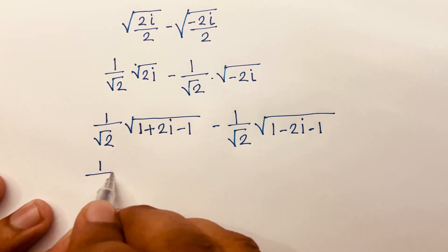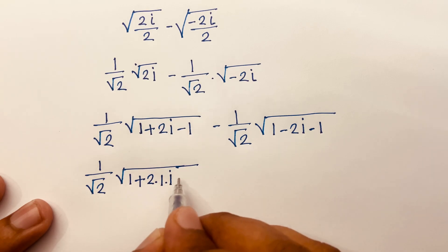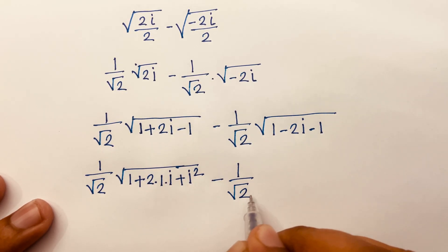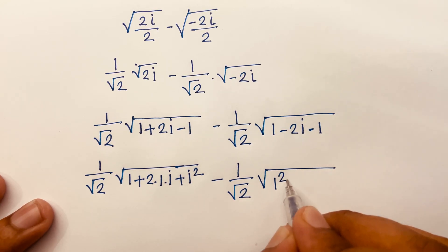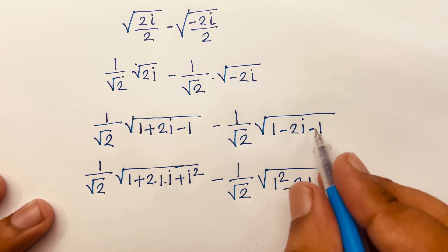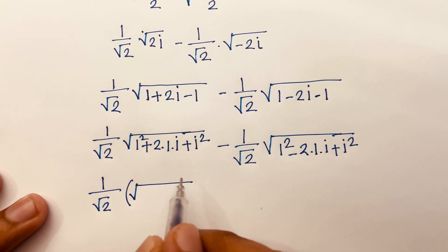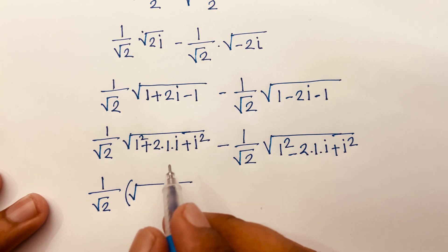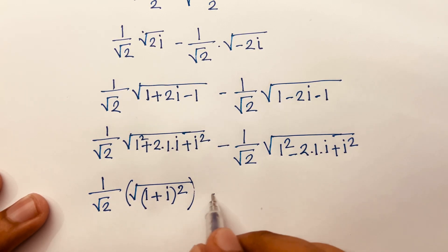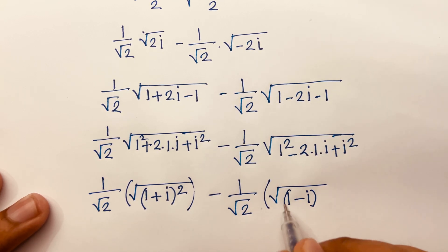Then I can say here is 1 over square root 2 and square root of 1 plus 2 times 1 times i plus i squared. You know that i squared equals minus 1. Then minus 1 over square root 2 times square root 2. Look, i squared is minus 1. Then I can say here is 1 over square root 2 times square root — look, a squared plus 2ab plus b squared, we know that equals a plus b whole squared. According to this rule, I can say here is 1 plus i bracket power 2, and here is minus 1 over square root 2 times square root 1 minus i bracket power 2.